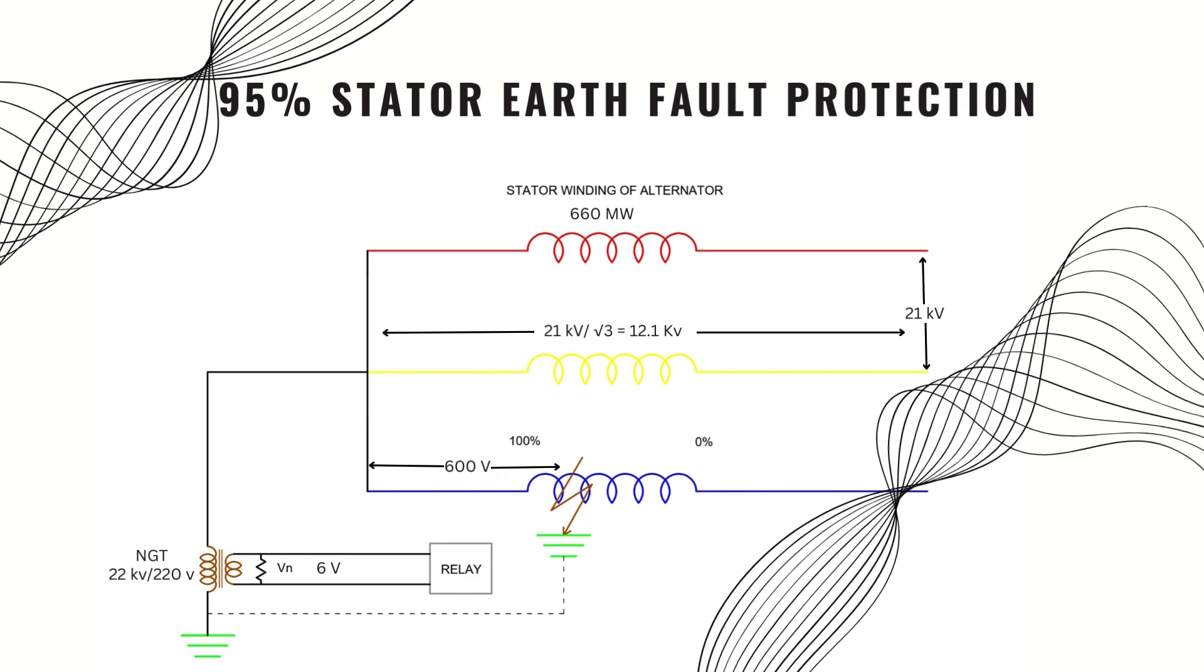But what will happen if the fault happens at the terminal point? At that time, the voltage across the NGT will become 12.1 kV and the secondary voltage will become 121 volts which is greater than the predetermined value of 6 volts and the relay will trip the generator.